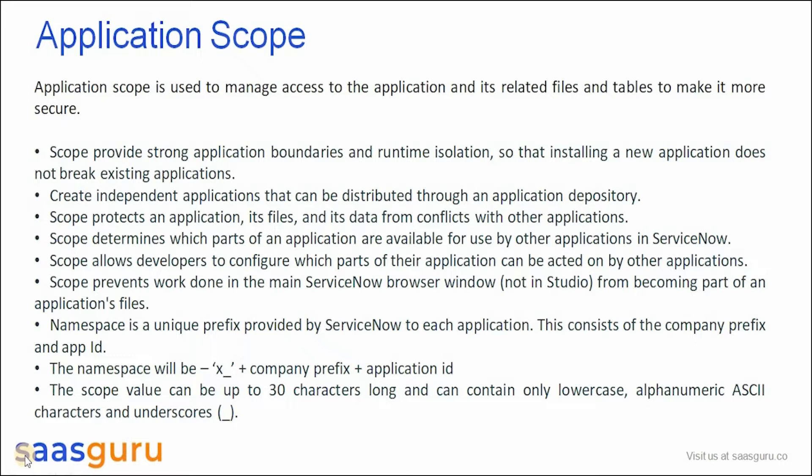Application Scope is used to manage access to the applications and IT-related files and tables to make it more secure, and to make sure that it doesn't conflict with any other applications or with the applications that are in Global Scope. The Application Scope actually helps us by creating independent applications that can be distributed from one instance or from one customer to another using the Application Repository.